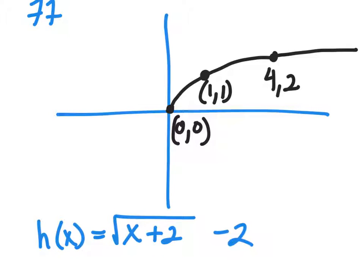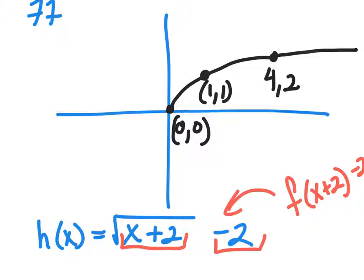Then I need to look at my transformation. This is, in fact, exactly the same thing as saying f of x plus 2 minus 2. This is the inside of my function. This is the outside of my function. So this really means that we're going left 2 and down 2.